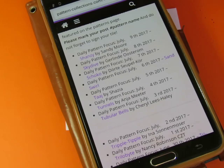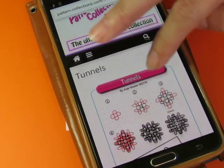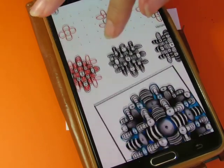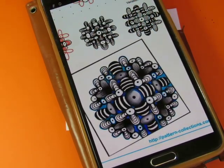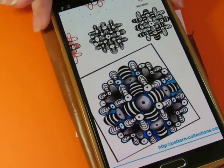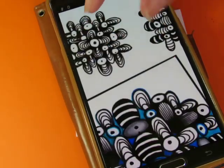Go to pattern focus to find today's pattern. Scroll down to today's date. And today we are going to do, interesting. I've never seen that one before. This one is called Tunnels.